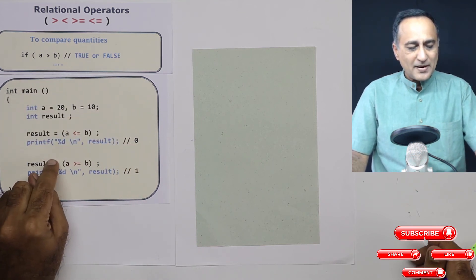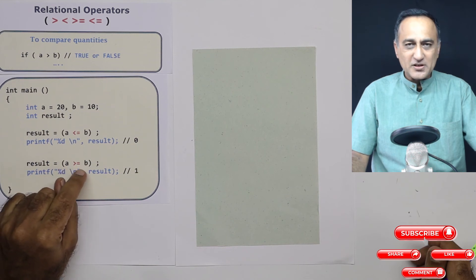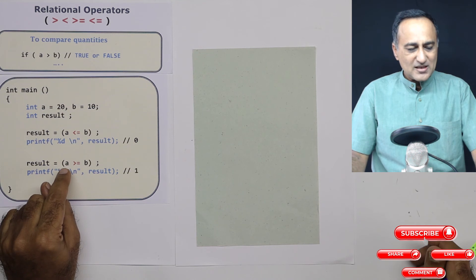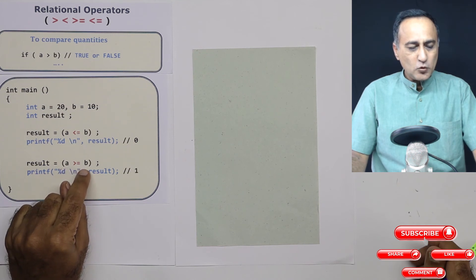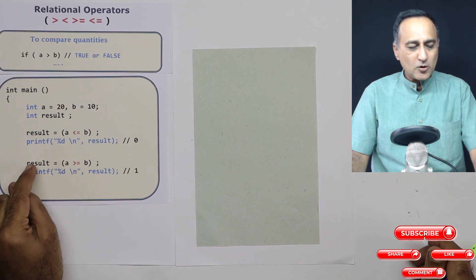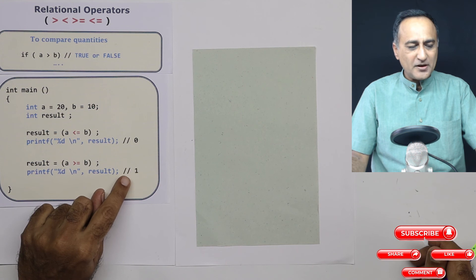Let's do one more comparison here. Here I'm comparing is A greater than or equal to B. This is a simple expression and anything like this is an expression. So I'm saying is A greater than or equal to B. Now 20 is definitely greater than 10. So the result is going to be true. So the answer in this bracket is going to come out as one, one is going to be copied to result. So when I print result, it's going to print one.